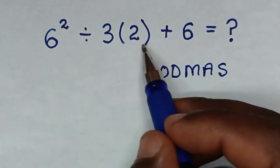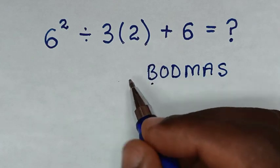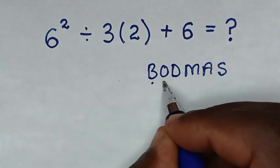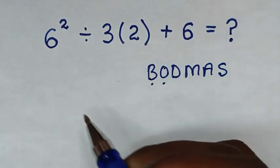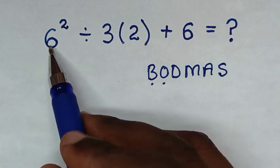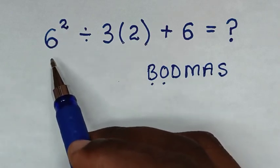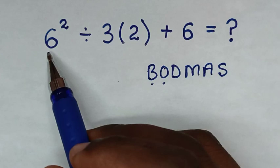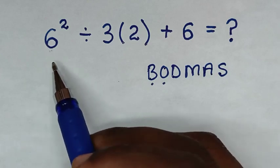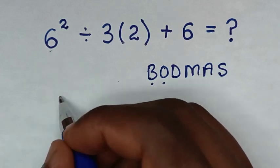And from order or exponents, we have order or exponents which is this 6 square. And this 6 square is 6 times 6. Now 6 times 6 is 36.